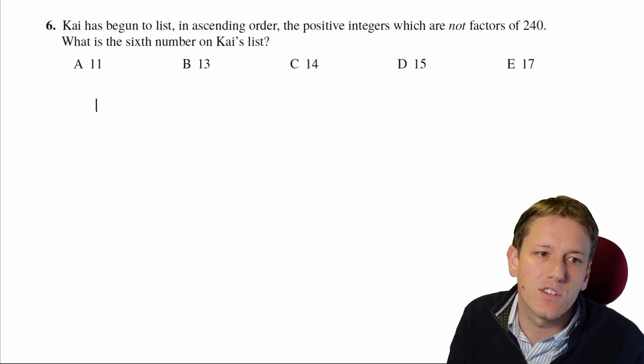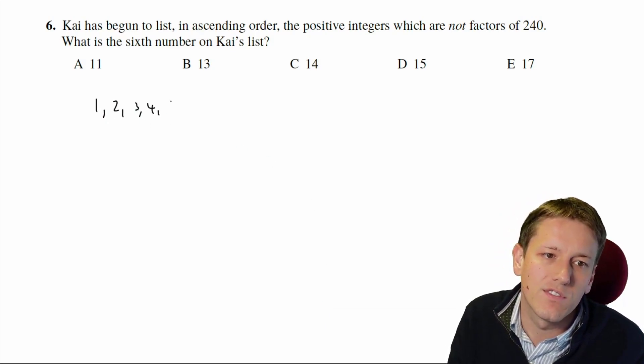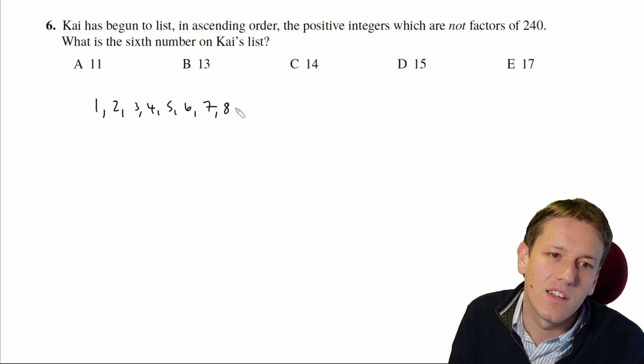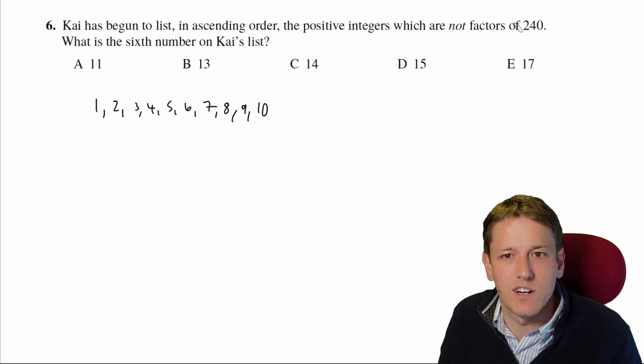So if we start just listing the positive integers, 1, 2, 3, 4, 5, 6, 7, 8, 9, 10, etc. I can cross out the ones that are factors.